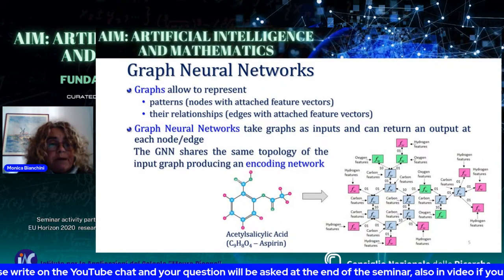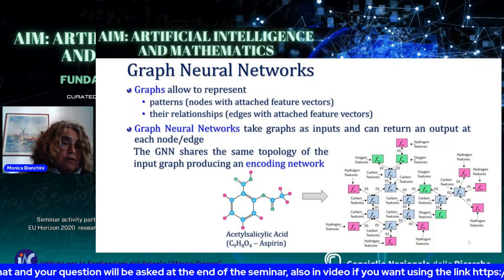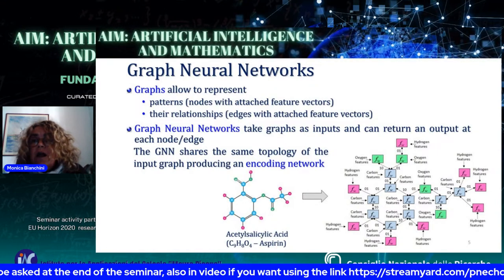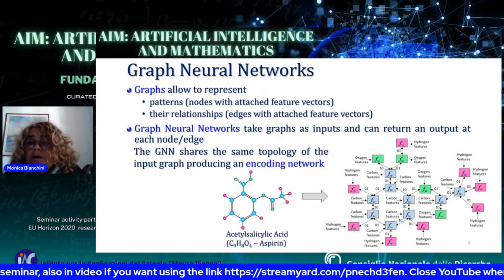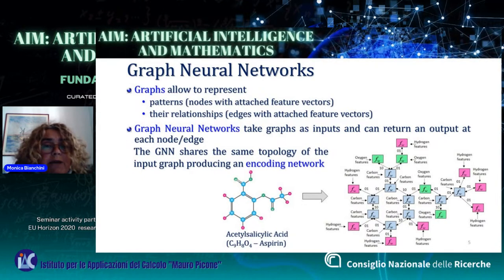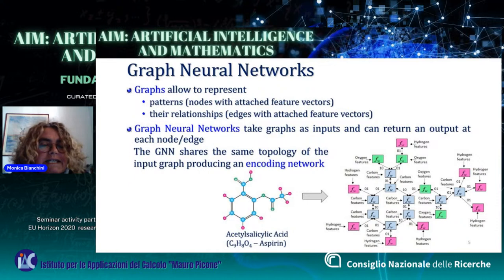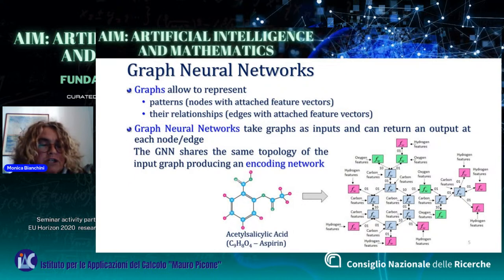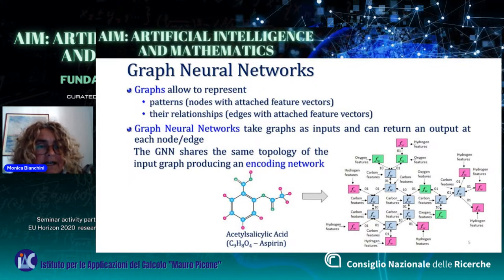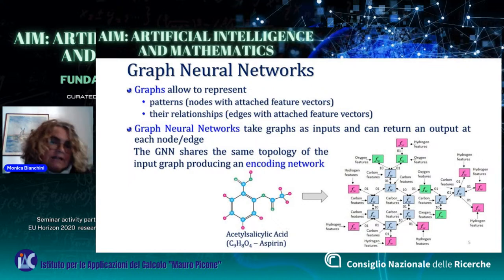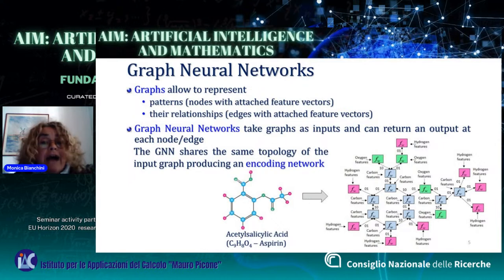A graph-focused problem can be thought of as deciding if a molecule is mutagenic or carcinogenic. In this case, this property is not a property of particular atoms, but instead of the whole graph. Here we can see the molecule of acetylsalicylic acid, which is the active principle of aspirin, which is naturally represented as a graph. On the right-hand side of the slide, we have the corresponding graph neural network, represented as an encoding network with a unit able to produce some computation at each node.